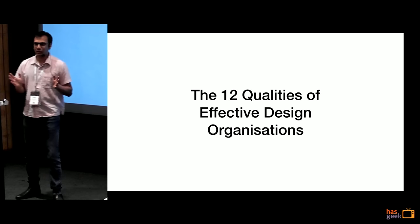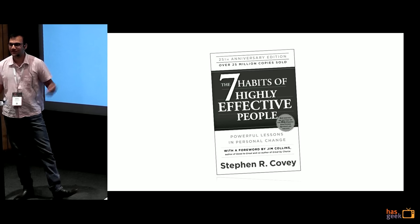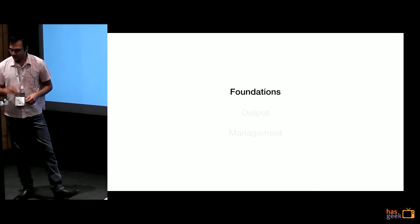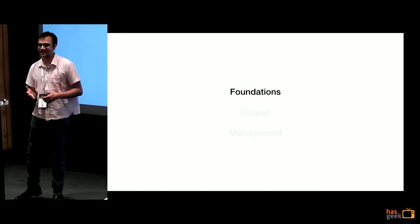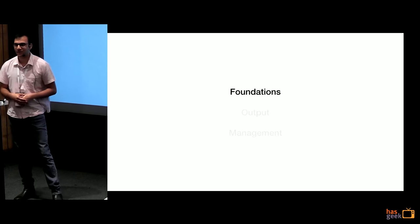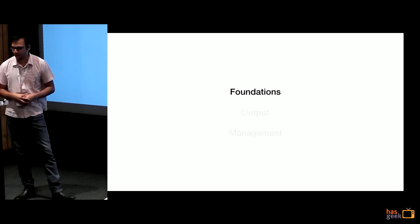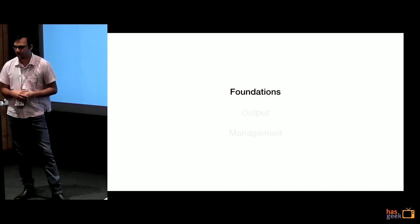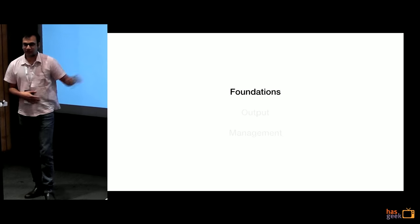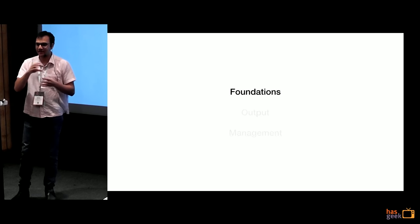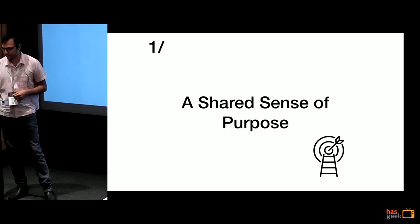Self-help book time: 12 qualities of effective design organizations. I stole this from another popular book. I'm going to jump into things. There are three things I'm going to be talking about in the way I've structured these 12 items: the foundations of what's required, output, and management. There are components under each of these that are required to build effective design teams.